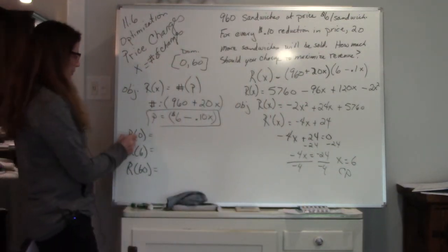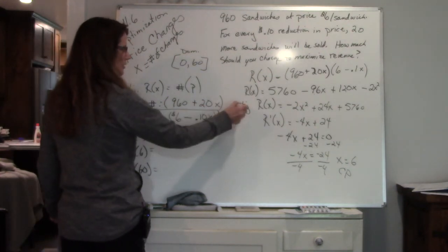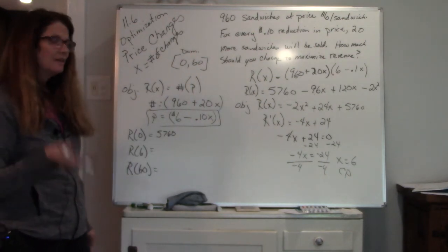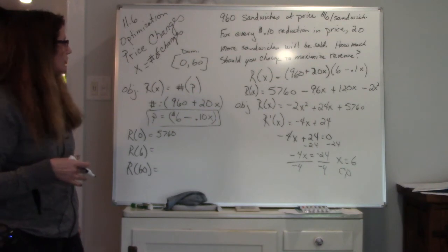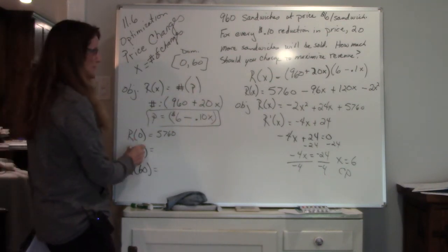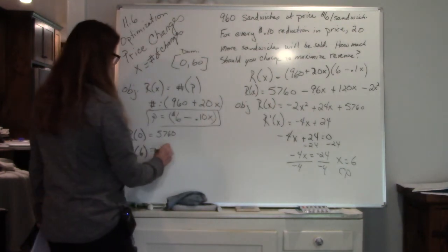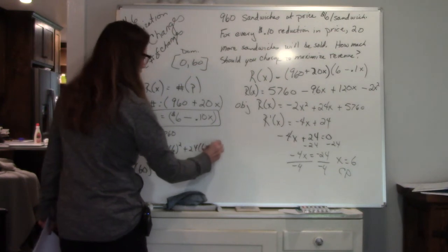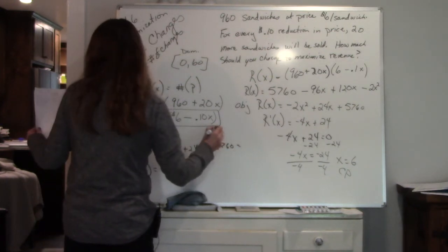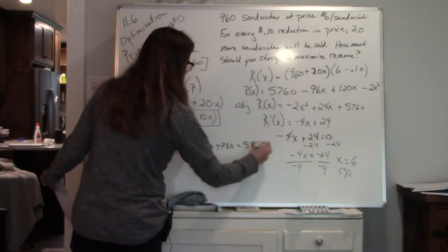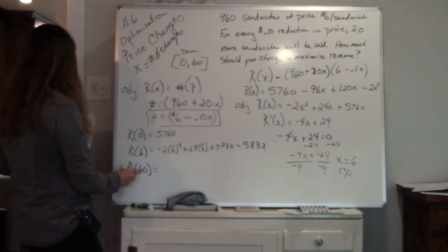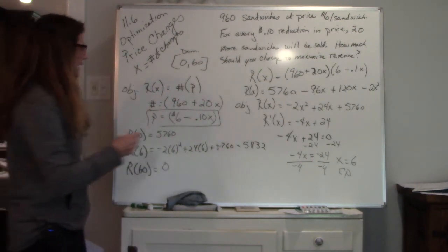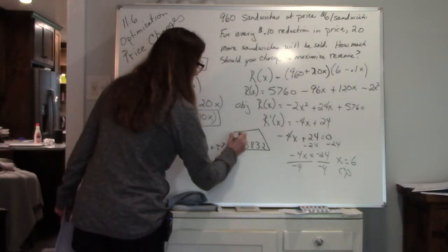So if I plug 0 into here, I'm going to get 5,760. That is my fixed amount. That's how much it's going to cost me, even if I never sell one sandwich. If I plug in 6 into here, I get negative 2 times 6 squared plus 24 times 6 plus 5760. And that amount is 5,832. If I plug 60 in to that equation, I'm going to get 0. So here is the maximum revenue.